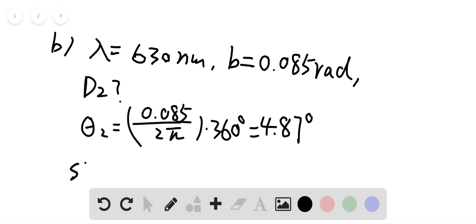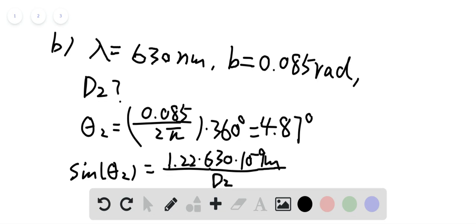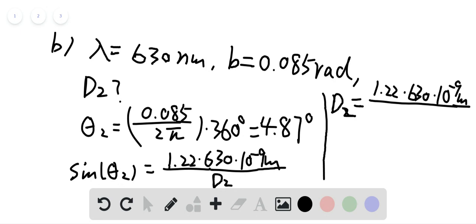And we know sin theta 2 is equal to 1.22 times the lambda here, which is 630 times 10 to the negative 9 meters, and then divided by the diameter d2, which we don't know yet but we'll figure it out soon. So d2 is equal to 1.22 times 630 times 10 to the negative 9 meters divided by sin 4.87 degrees.